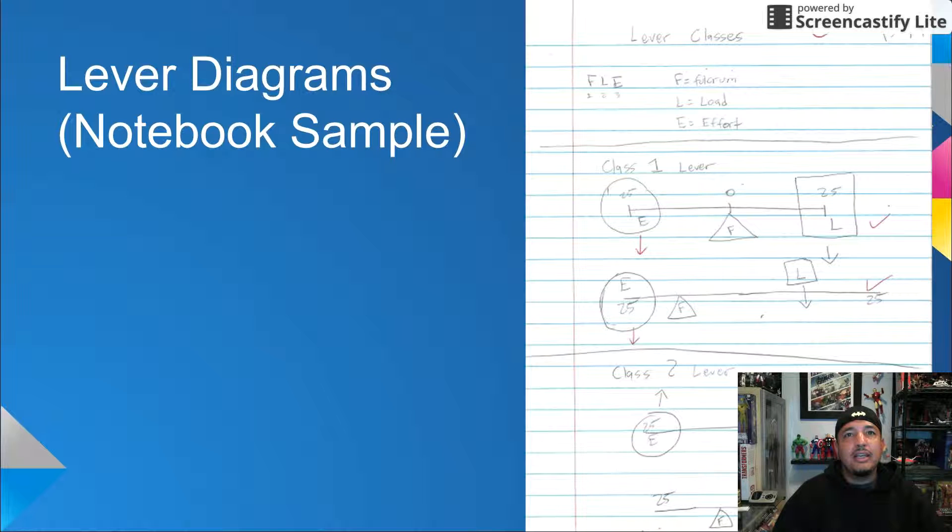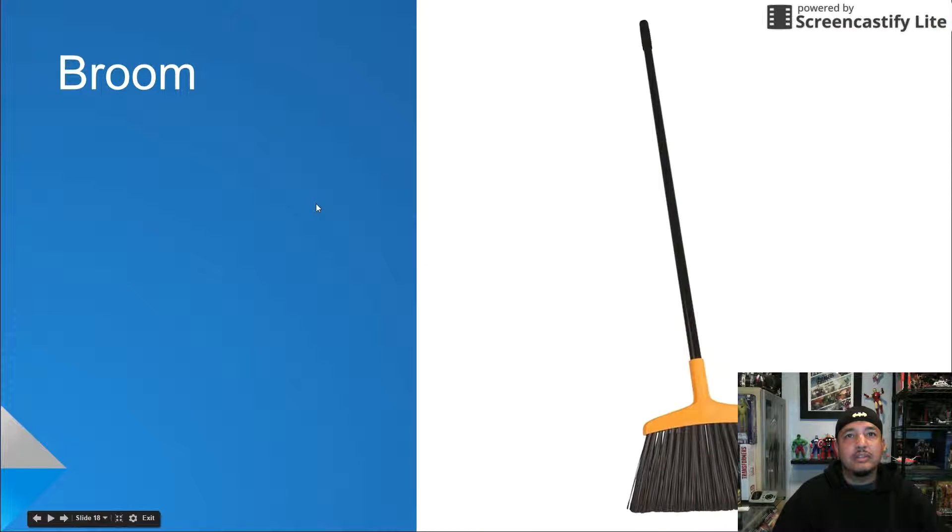Part three and four are similar, the difference being that students use real tools for part three and pictures of tools for part four. For part three, they're essentially manipulating the tools, discussing which lever class they think each tool is, and drawing a diagram of the lever in the notebooks or in the duplication masters.